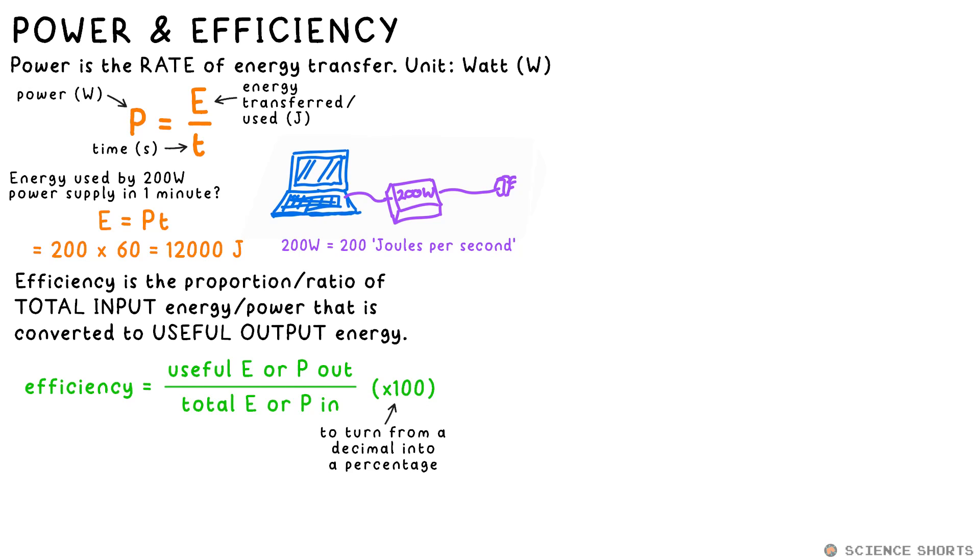Efficiency is a measure of how much energy transferred is used usefully, and it also works with power too. Let's say that my power supply actually only supplies 120 watts of useful power to the laptop, even though it uses 200 watts altogether. So its efficiency is 120 divided by 200, which is 0.6 as a decimal.